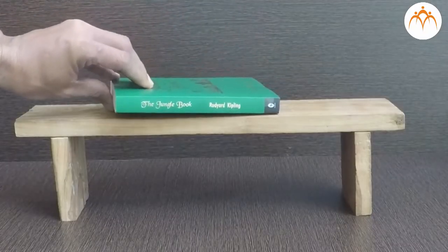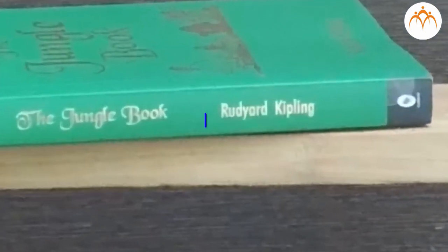If I place this book on the wooden platform, gravity pulls the book downwards. Wooden platform pushes the book upward. As two forces are equal in magnitude but opposite in direction, book is said to be in equilibrium. There are no other forces acting on the book. Book is at rest.